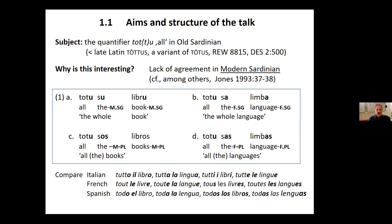So we have TOTTO SU LIBRU, the whole book, but also TOTTO SA LIMBA, TOTTO SAS LIMBA, TOTTO SOS LIBROS, in contrast to, I think, all other Romance languages, maybe with the exception of Sicilian.